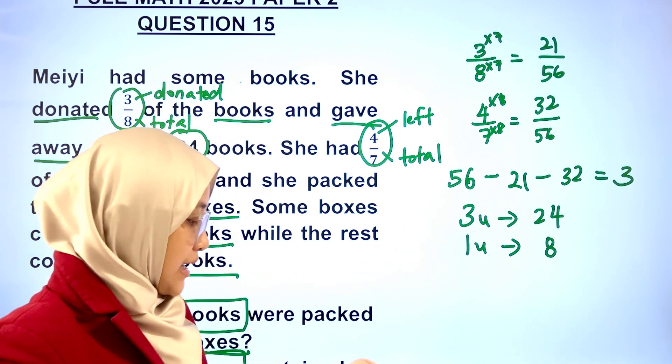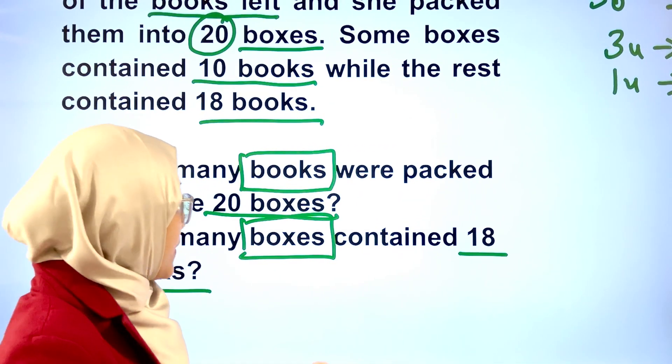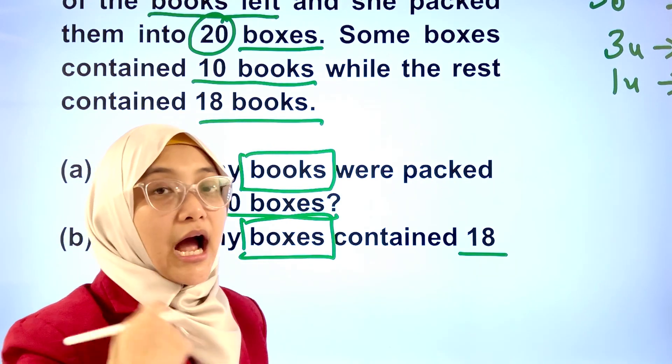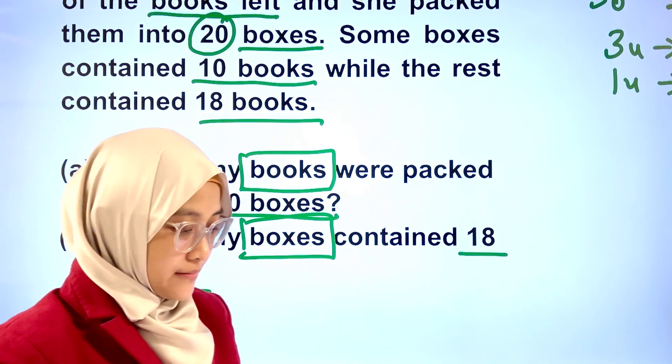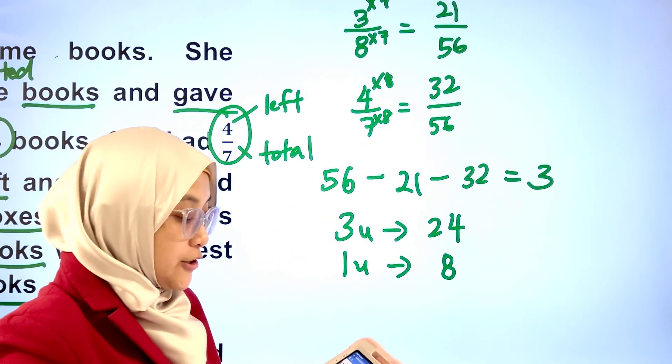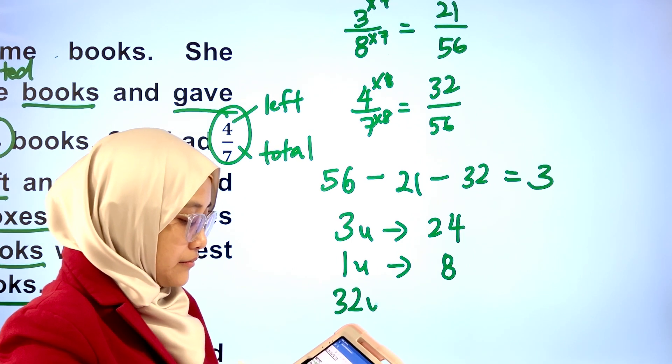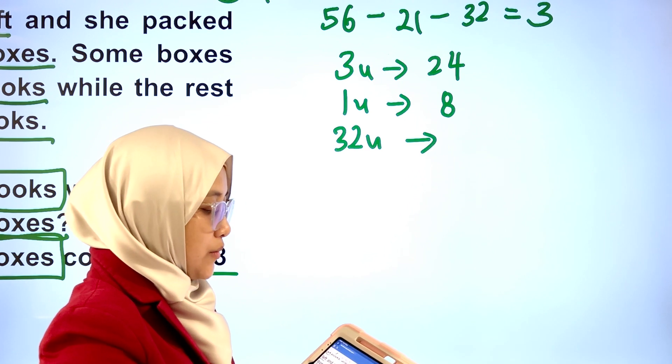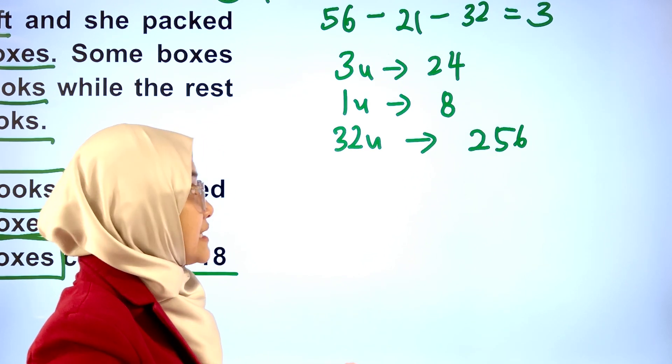24 divided by 3 is 8. The question wants to know how many books were packed into the 20 boxes, meaning how many books were left. And that's represented by 32 units. If 1 unit refers to 8 books, 32 units will be 256 books.